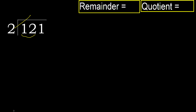But not greater — 2 multiplied by 7 is 14, and 14 is greater. 2 multiplied by 6 is 12, it is not greater. 12 minus 12 equals 0.